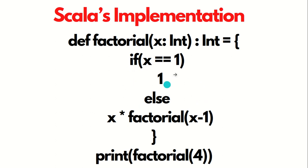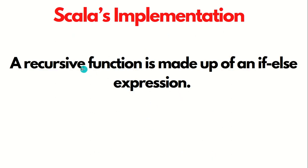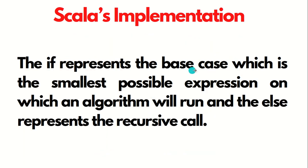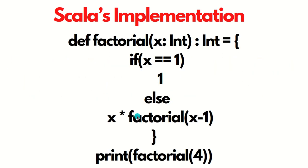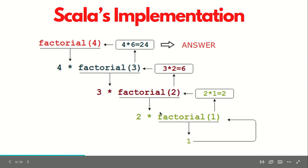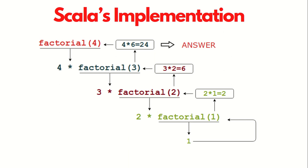A recursive function consists of two major portions: an if portion and an else portion. The if represents the base case, which is the smallest possible expression on which the algorithm will run. The else represents the recursive call. Together, these two parts make up a recursive function.